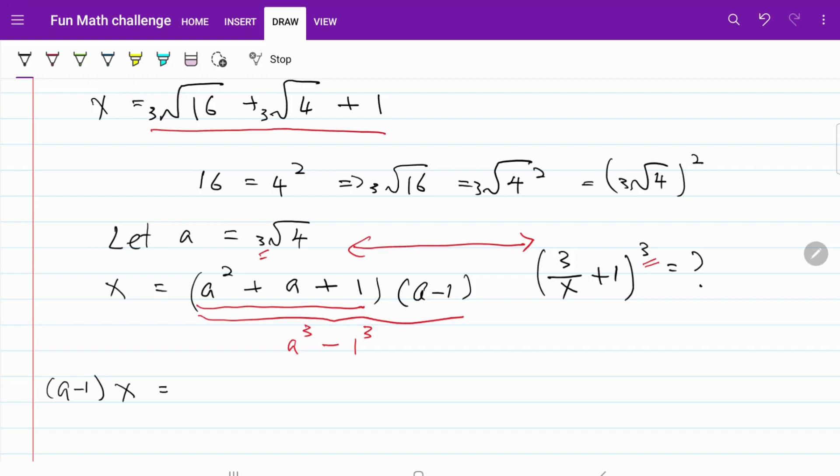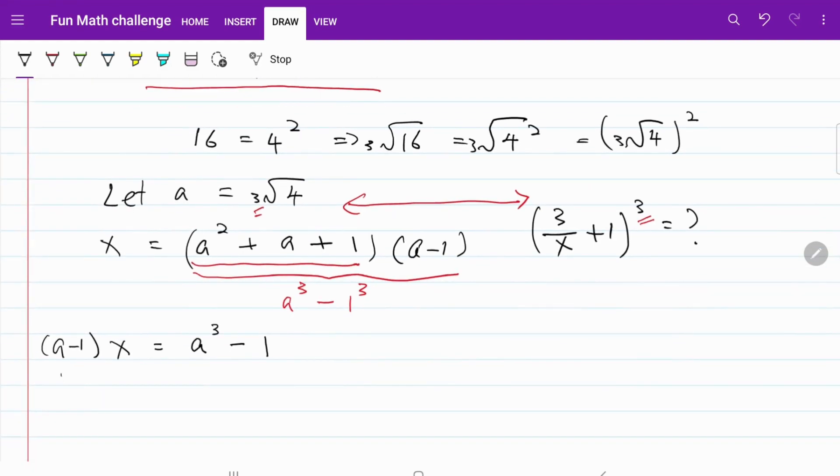Now I have a minus 1 multiplied by x equals a cubed minus 1. In other words, a minus 1 times x is equal to the cube root of 4 cubed minus 1. A minus 1 times x is equal to 4 minus 1 equals 3.